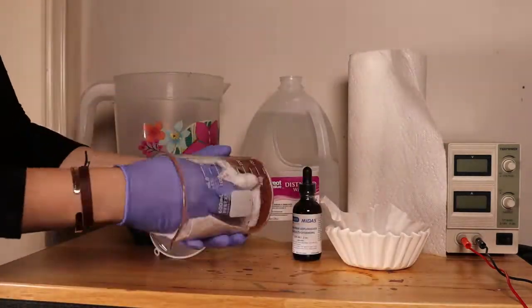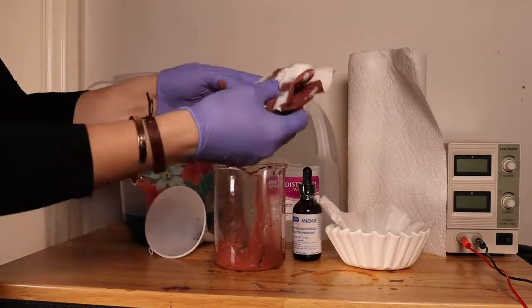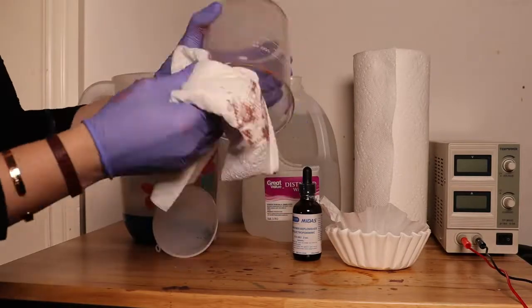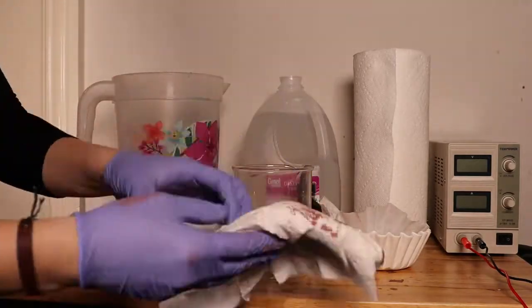Right here I'm taking out my funnel and you're going to notice all that leftover sludge. Take a wad of paper towels and you're just going to wipe on the inside of the beaker to remove all the leftover copper.